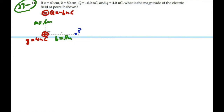We want to approach this by finding the individual electric fields due to big Q and little Q, and then superimpose those together — add them together as vectors.